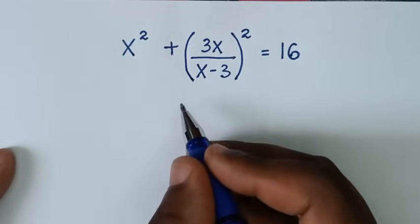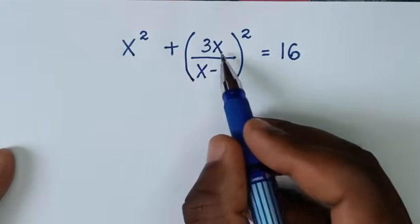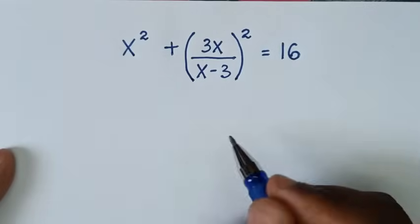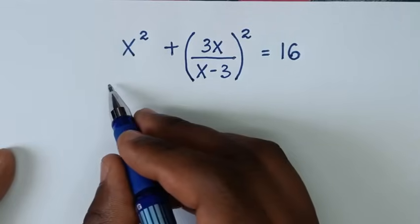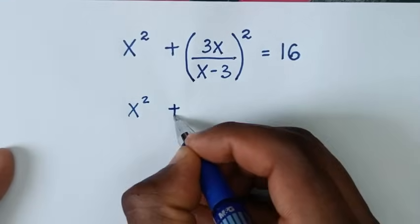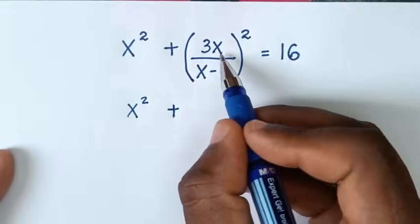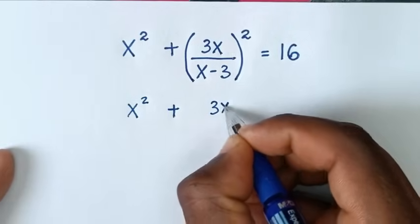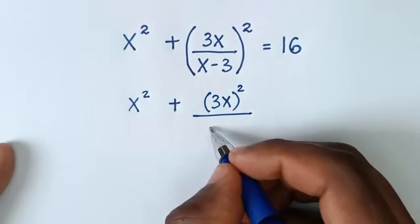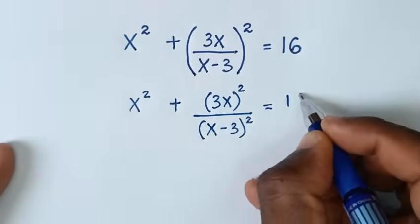Hello, you are welcome to solve this math problem, which is x square plus 3x over x minus 3 bracket square is equal to 16. To find the values of x from this equation, we'll take this square in the numerator and in the denominator, so it will be 3x bracket square over x minus 3 bracket square is equal to 16.